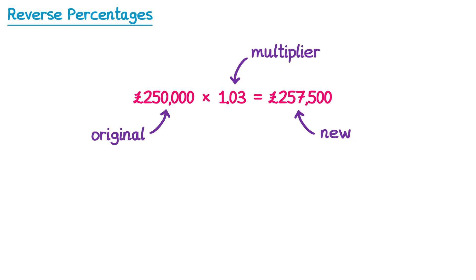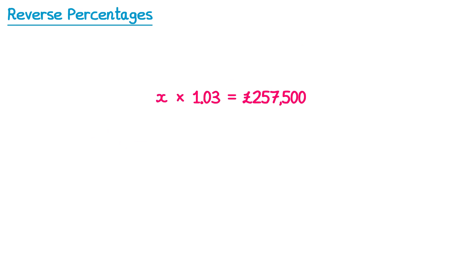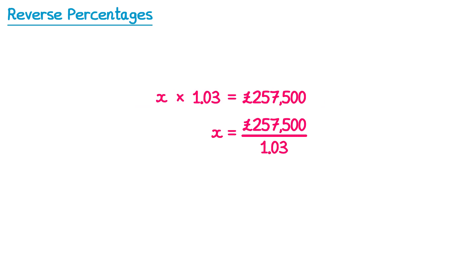But what if it was the other way around? We were told the £257,500 but not told the £250,000. How would we work this out? This is precisely the point of this video. If we didn't know the original value, we'd need to give it a letter, say x. We'd end up with the equation: x multiplied by 1.03 equals £257,500. Since we're multiplying by 1.03 on the left-hand side, we divide both sides by 1.03. On the left, the multiply by 1.03 cancels, leaving x equals. On the right, 257,500 divided by 1.03 gives x = 250,000. This demonstrates how we can work backwards to find an original amount if we know the final amount.